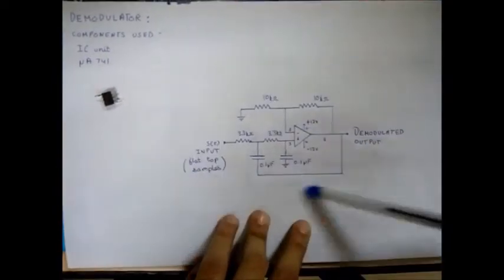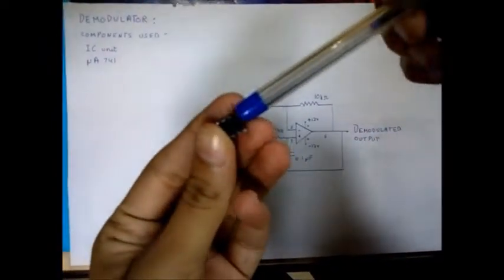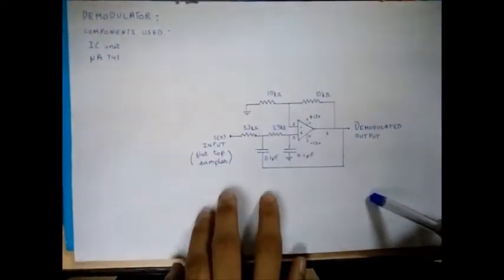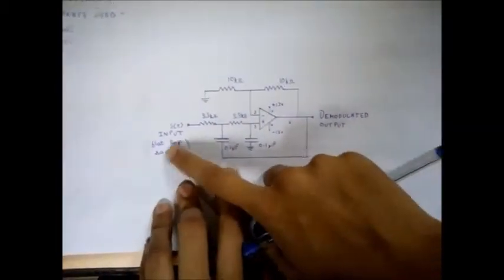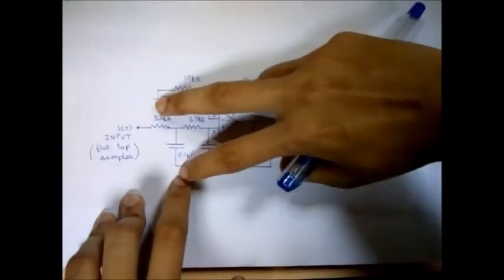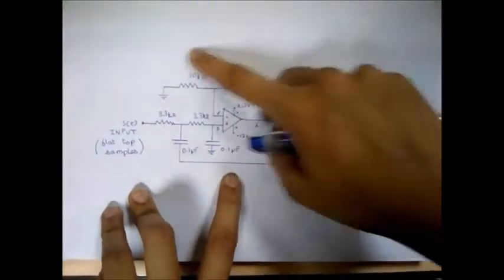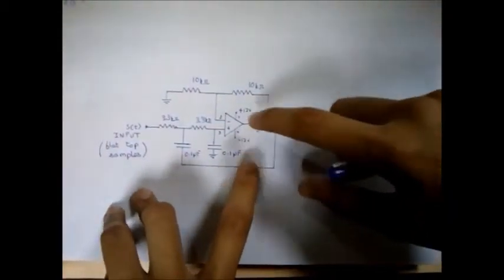This is the demodulator section part of the flat-top experiment. The component used is an IC MUA741, described similarly as in the previous section. Here is our input where we will provide the flat-top samples. Next we have our first-order RC stage and second-order RC stage, and this entire section will comprise our Chebyshev second-order low-pass filter. Once the flat-top samples are propagated through this filter, we will obtain our demodulated output.